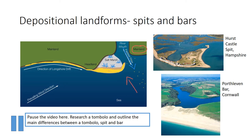You can see a spit here on the slide — Hurst Castle Spit in Hampshire. Another depositional feature is bars. Bars are narrow ridges of sand and shingle that grow across a bay as a result of longshore drift. They can trap shallow lakes called lagoons behind them. Lagoons don't last forever and may eventually fill up with sediment. Storm waves sometimes crash over the top or break through a bar.